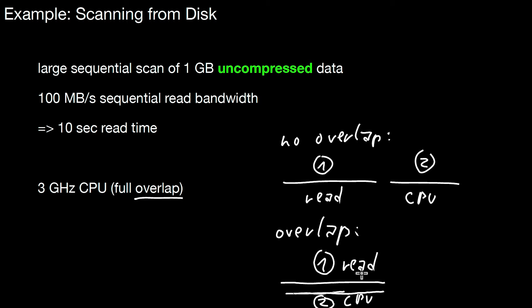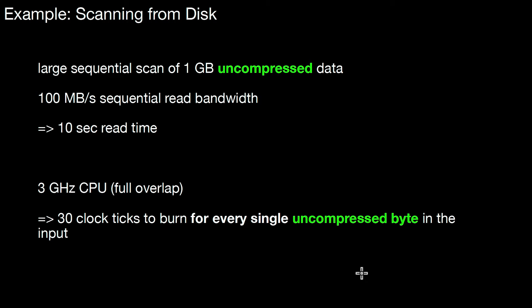The entire process is IO bound — the disk is the bottleneck. We have basically 30 clock ticks to burn for every single uncompressed byte in the input. How? We have 10 seconds of CPU time, so 10 × 3 = 30 billion clock ticks to spend while reading that file. That gives us 30 clock ticks for each single uncompressed byte. Only if we spend more than 30 clock ticks per byte does the process become CPU bound; otherwise it remains IO bound.